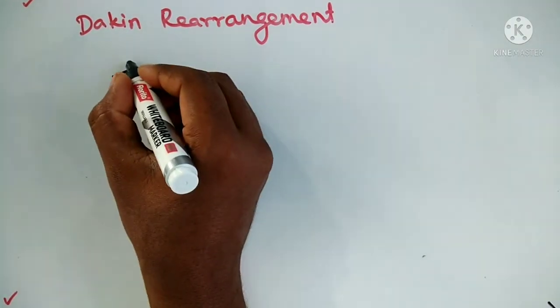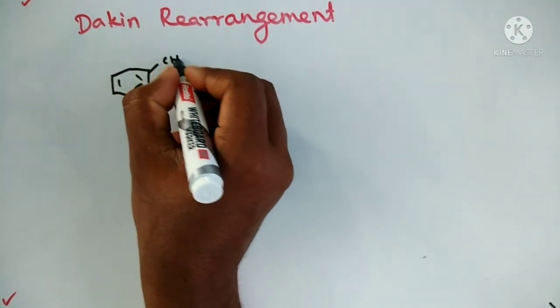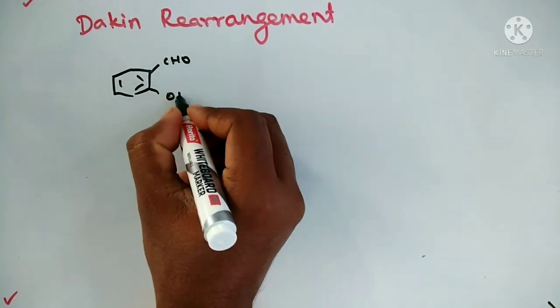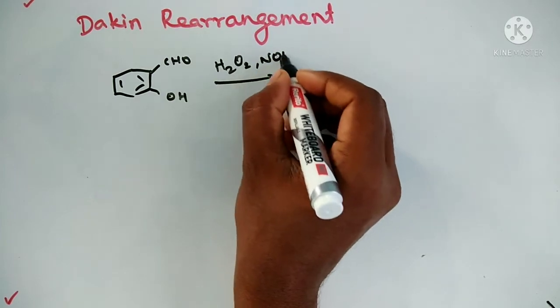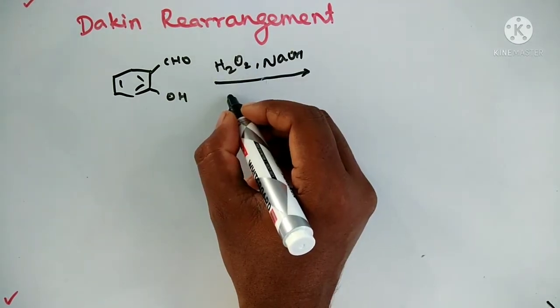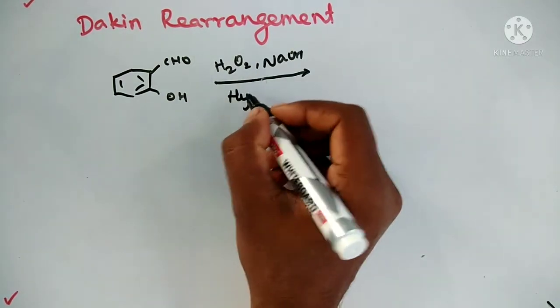Salicylaldehyde in the presence of hydrogen peroxide and base, followed by hydrolysis, gives the catechol.